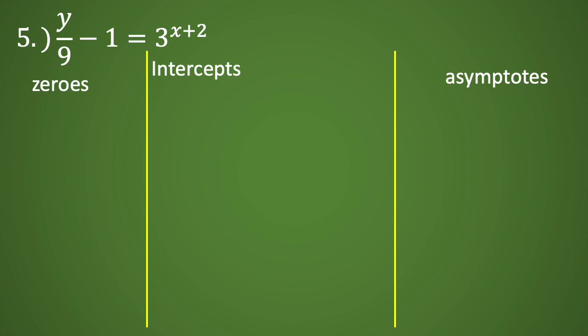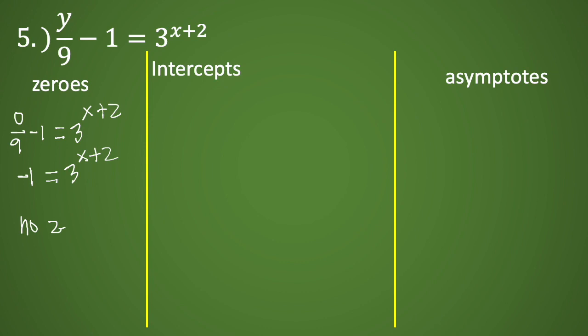For example number five, we have y over nine minus one equals three raised to x plus two. Setting y to zero: zero divided by nine minus one equals three raised to x plus two, giving us negative one equals three raised to x plus two. Since we cannot express negative one as a power of three resulting in a negative number, there are no zeros for this example, and therefore no x-intercepts.